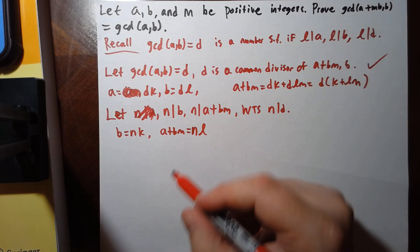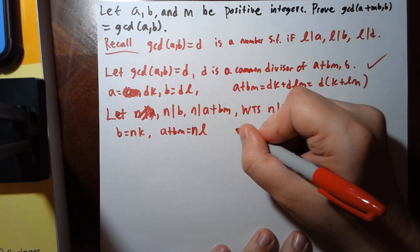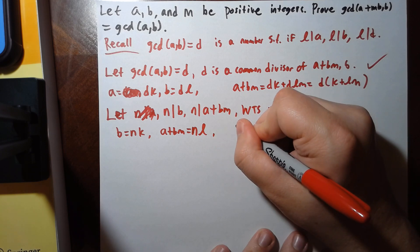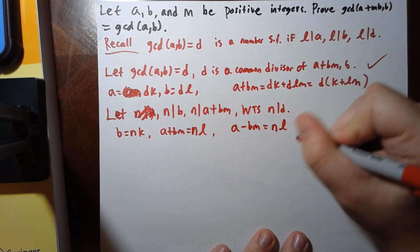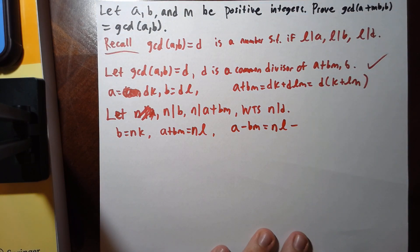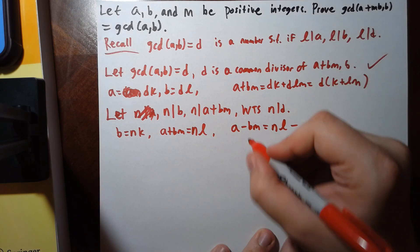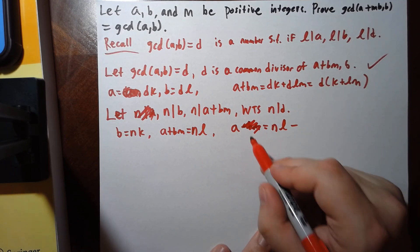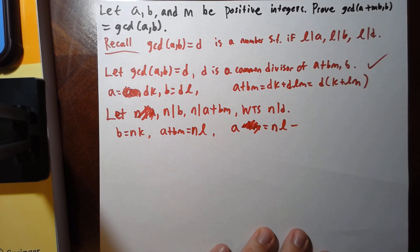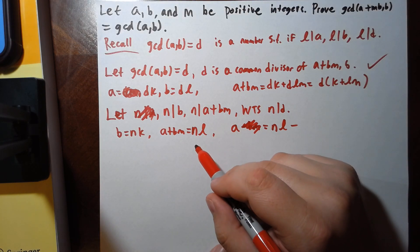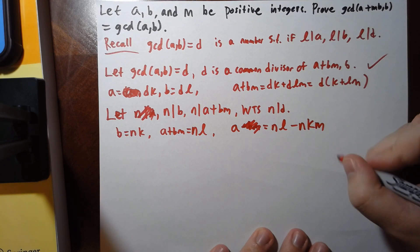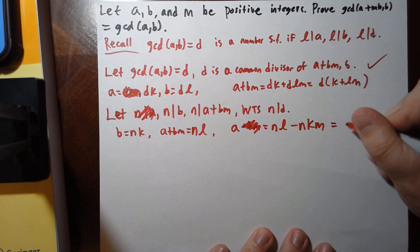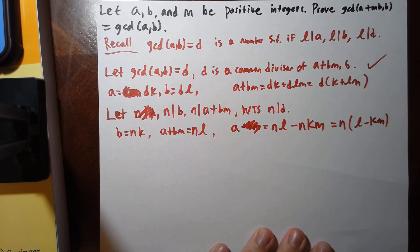And what you can do is say that a is equal to a plus bm minus bm. So that's nl minus bm, which is nl minus nkm. And this is n times l minus km. Right?